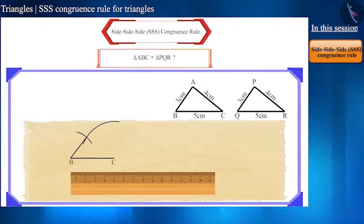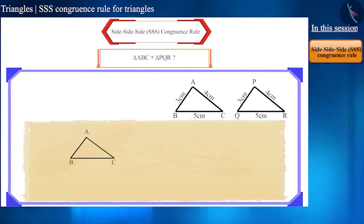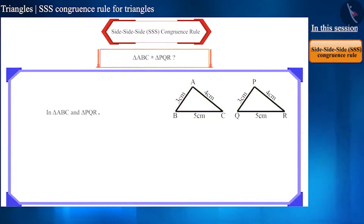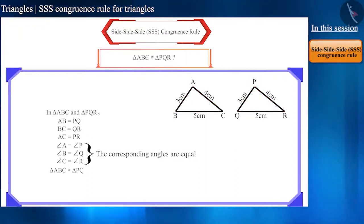The intersection point of these two is point A. Similarly, we will draw triangle PQR. Now, cut the triangles and keep similar sides one on top of the other. You can see that these two triangles cover each other completely. This means the corresponding parts of these triangles are equal. That's why triangle ABC and triangle PQR are congruent.